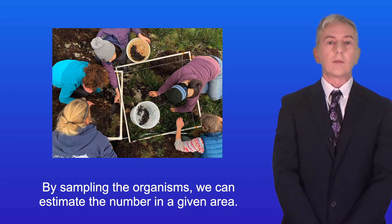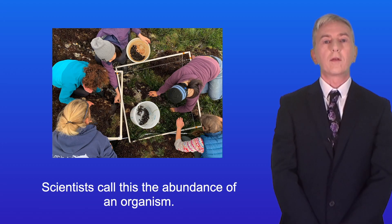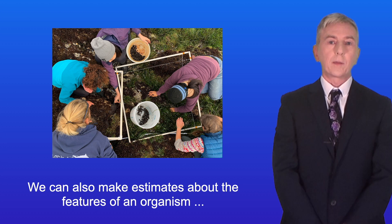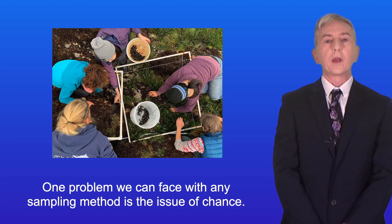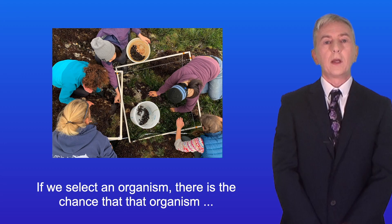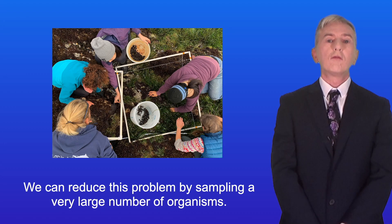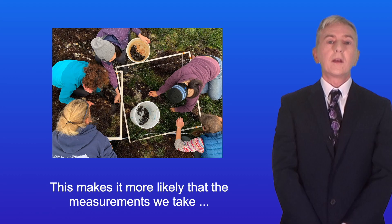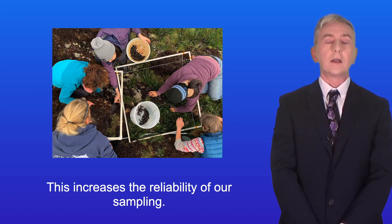By sampling the organisms we can estimate the number in a given area — scientists call this the abundance of an organism. We can also make estimates about the features of an organism, for example the mass. One problem we can face with any sampling method is the issue of chance. If we select an organism, there is the chance that that organism may not be typical of the whole group. We can reduce this problem by sampling a very large number of organisms, which makes it more likely that the measurements we take are representative of the entire population, and this increases the reliability of our sampling.